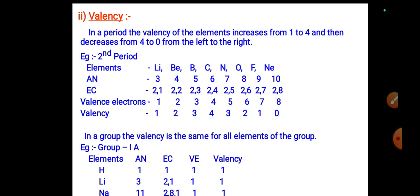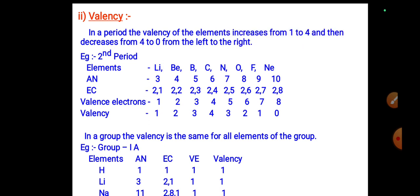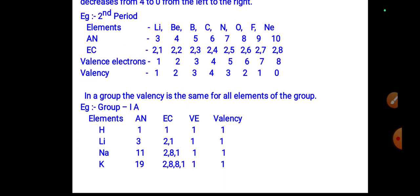For second period elements: lithium (3), beryllium (4), boron (5), carbon (6), nitrogen (7), oxygen (8), fluorine (9), neon (10). Electronic configurations: lithium 2,1; beryllium 2,2; boron 2,3; carbon 2,4; nitrogen 2,5; oxygen 2,6; fluorine 2,7; neon 2,8. Valence electrons: 1, 2, 3, 4, 5, 6, 7, 8. Valency: lithium 1, beryllium 2, boron 3, carbon 4, nitrogen 3, oxygen 2, fluorine 1, neon 0.